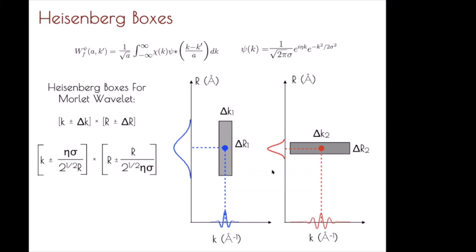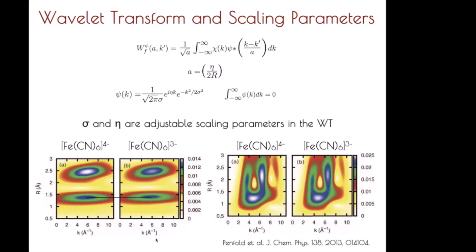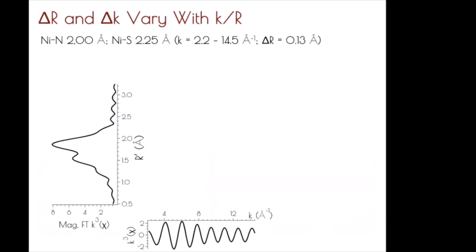I chose two parameter sets because in that paper using the Morlet wavelet approach to study small discrete molecular species, these were the two sets of parameters used. In one case you get very nice resolution in R space but you lose resolution in K space, making it difficult to distinguish scatterer types but giving you nice resolution of scatterer distances. Inversely, you can increase resolution to better distinguish scatterer types but lose resolution on distance.